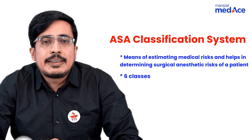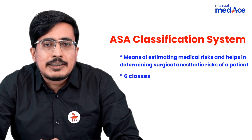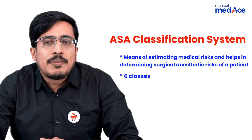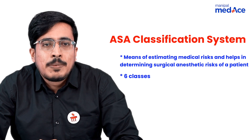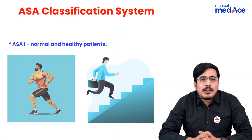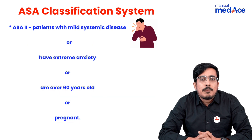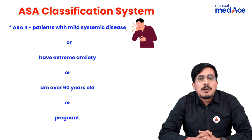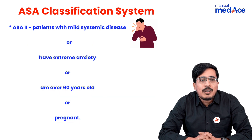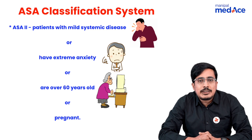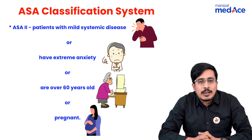There are totally six ASA classes which we classify based on different categories of the patient. ASA 1 includes a normal and healthy patient, whereas ASA 2 includes patients who have a mild systemic disease, or have extreme anxiety, or those who are aged above 60 years, or those who are pregnant.